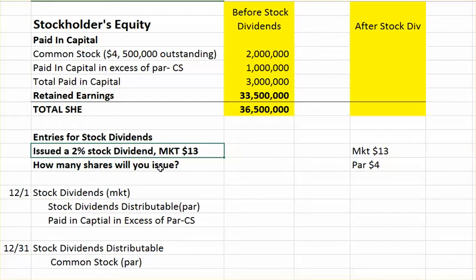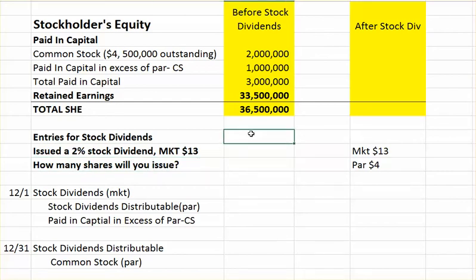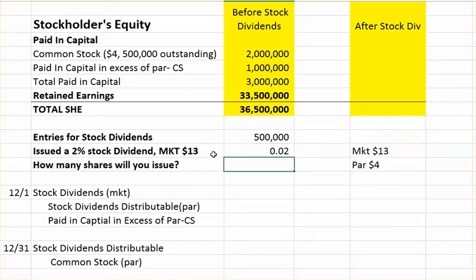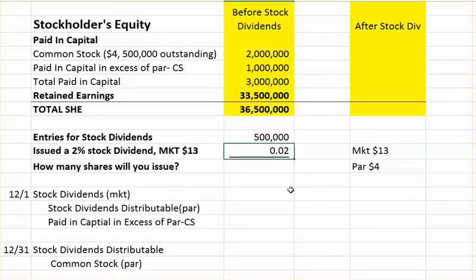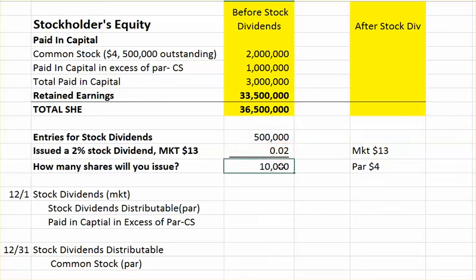The first thing we've got to figure out is how many shares will we issue. We have 500,000 outstanding shares of stock times 0.02 because we're issuing a 2% stock dividend, which gives us 10,000 shares of stock.